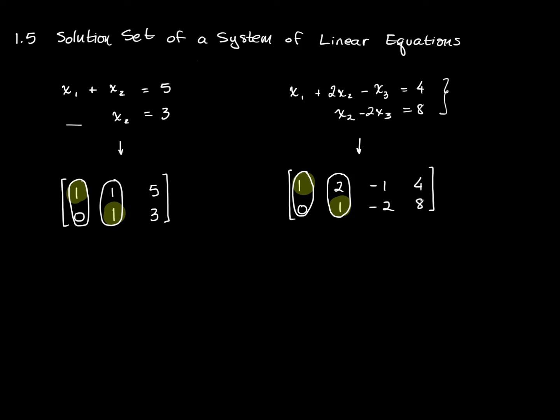The first system has two variables, x1 and x2. And I can say that the first column represents the first variable, the second column represents the second variable. I can do that over here too. These are all my x1s, these are all my x2s, these are all my x3s. We want those all to line up.